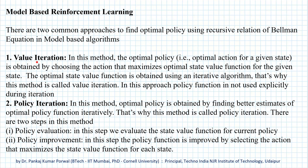The first one is called value iteration and the second one is called policy iteration. In the value iteration method, the optimal policy — that is, the optimal action for a given state — is obtained by choosing the action that maximizes the optimal state value function for the given state. The optimal state value function is obtained using an iterative algorithm, and that's why this method is called value iteration.